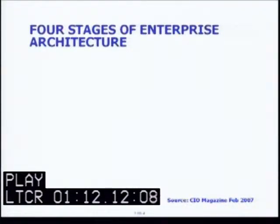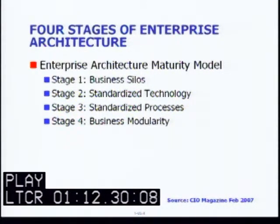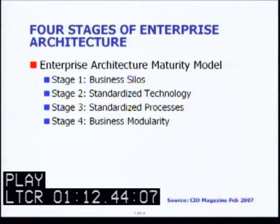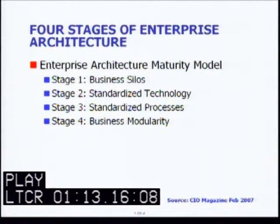I'd now like to move on to discuss the four stages of enterprise architecture. This is the enterprise architecture maturity model. The MIT Sloan Center for Information Systems Research conducted a survey of 456 enterprises over the period of 1995 to 2007. This was published in CIO magazine in Australia in February 2007, and in CIO magazine in the US in either November or December of 2006. As a result of that survey, the Center for Information Systems Research identified four key maturity model stages for enterprise architecture.